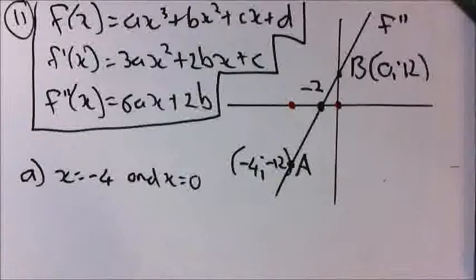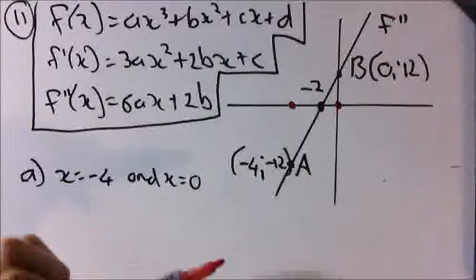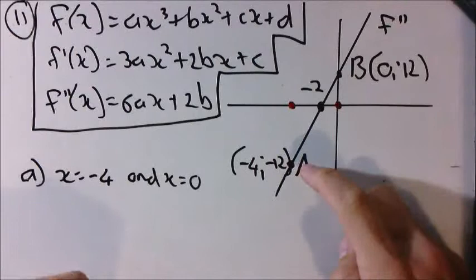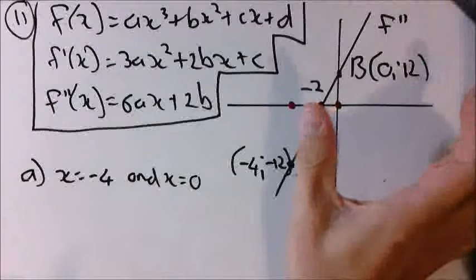Now the next question is about local maximum and local minimum. This straight line is the second derivative, and it refers to the concavity. At x = -2, that point is the point of inflection — the concavity is zero. To the left of it, this graph is negative, meaning concave downwards. To the right, it's positively concave, meaning concave upwards.